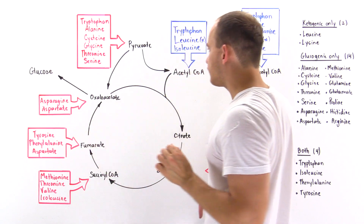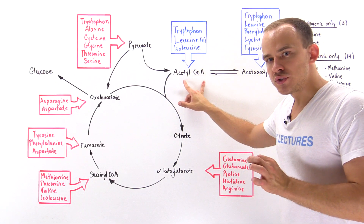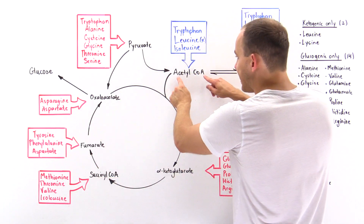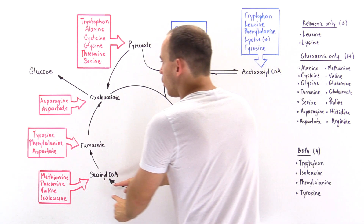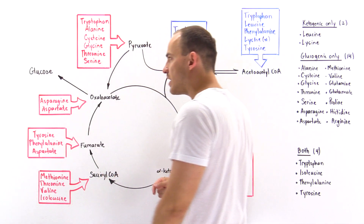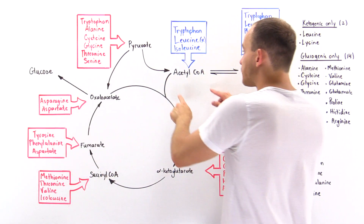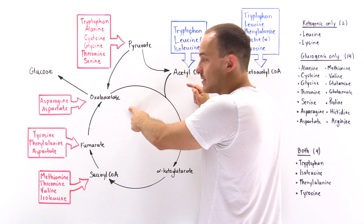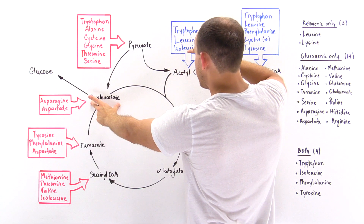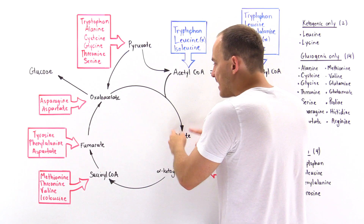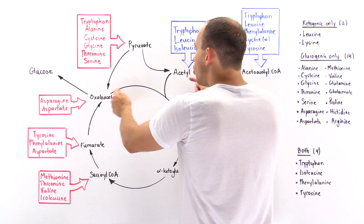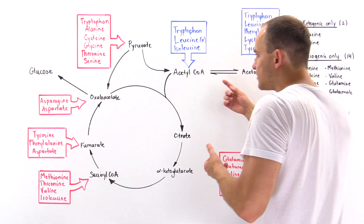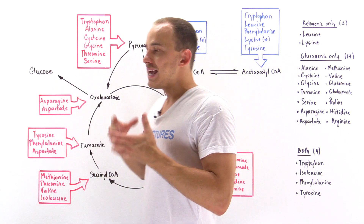One important fact to remember is that acetyl coenzyme A cannot be used — at least inside humans — to actually generate glucose molecules. Even though it seems like we could feed acetyl coenzyme A into the citric acid cycle, ultimately form oxaloacetate, and then form glucose via gluconeogenesis, that is not actually true. When we feed acetyl coenzyme A into the citric acid cycle, we use up a single oxaloacetate combined with acetyl coenzyme A to form citrate. Even though we form oxaloacetate at the end, we used one at the beginning, so the net result is zero. Therefore, we cannot use acetyl coenzyme A to form glucose in our liver.